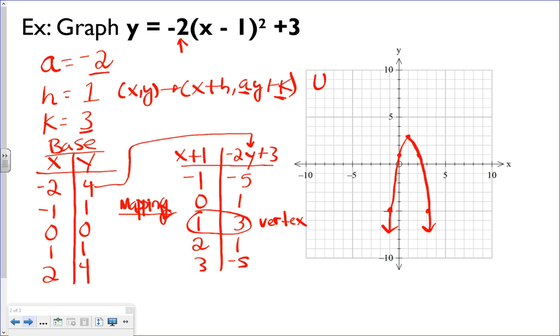So it ends up looking like that. And that's our transform function y = -2(x - 1)² + 3. There we go. So pretty much every question is exactly the same. I've got another example for you just to throw something a little bit different.